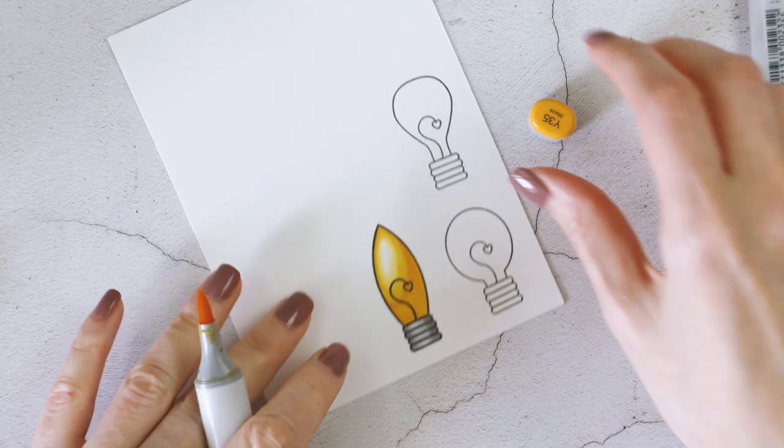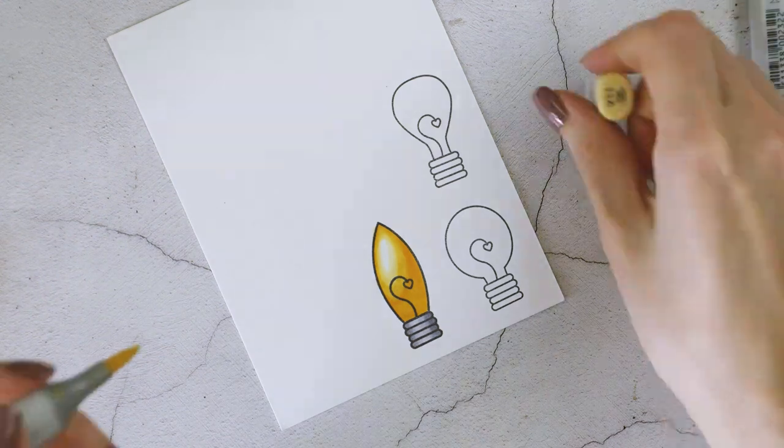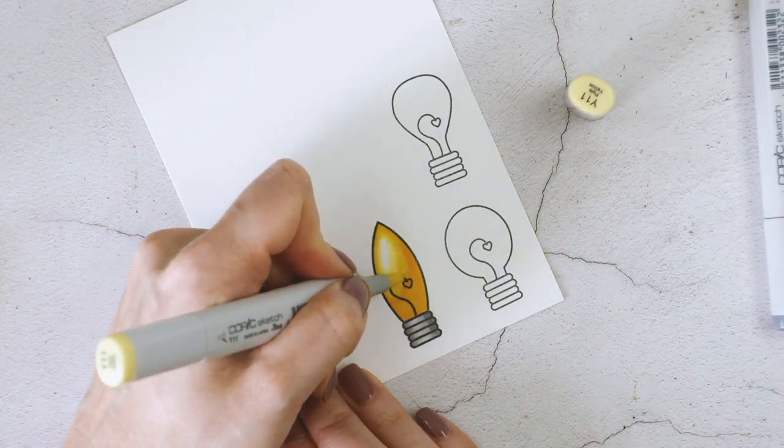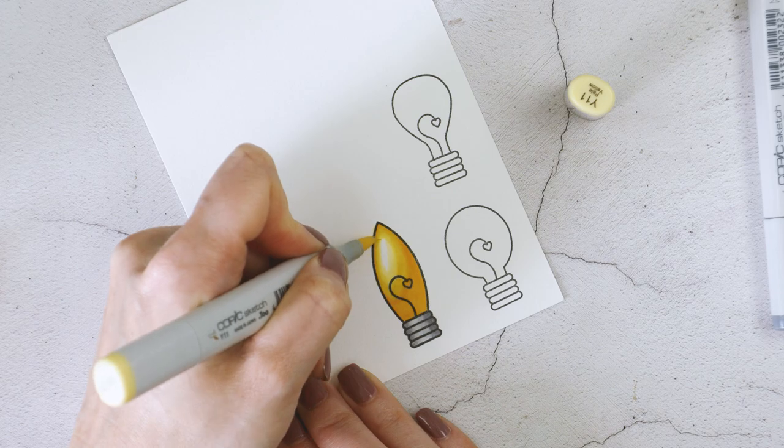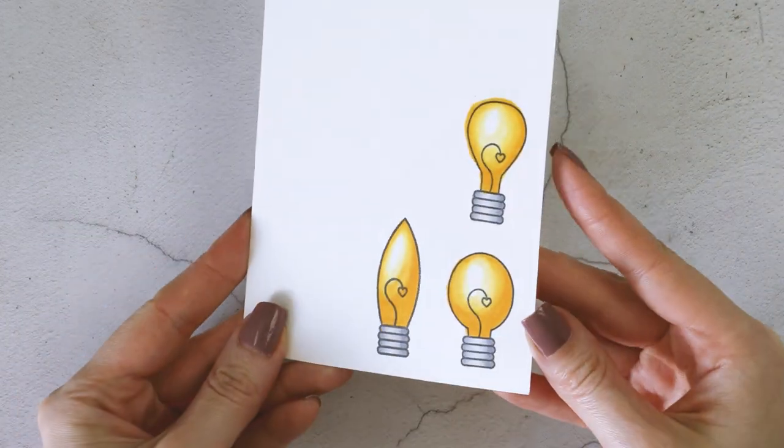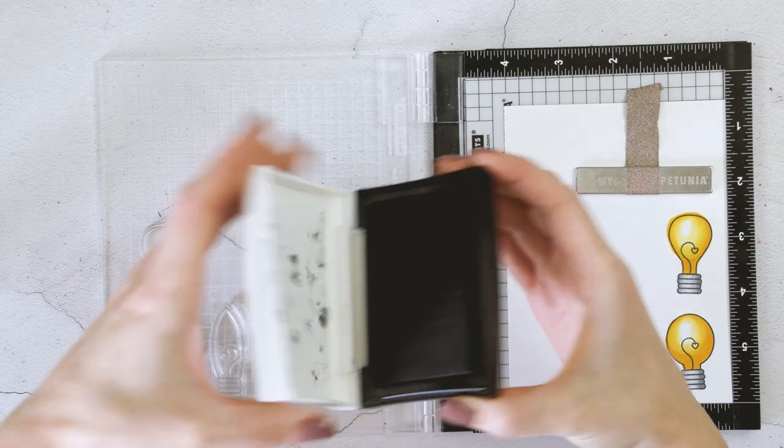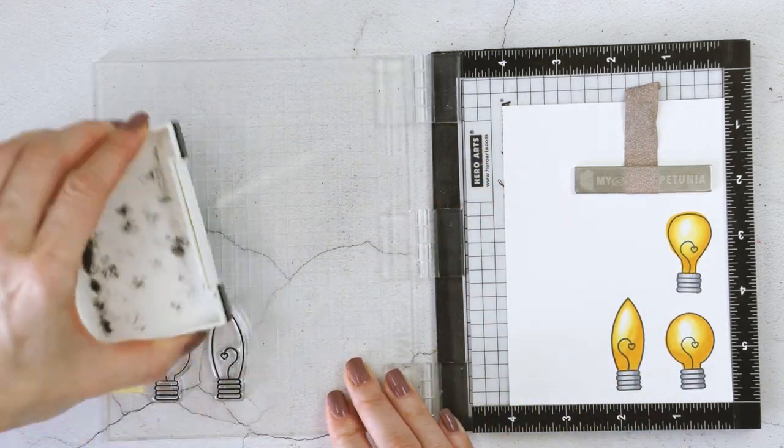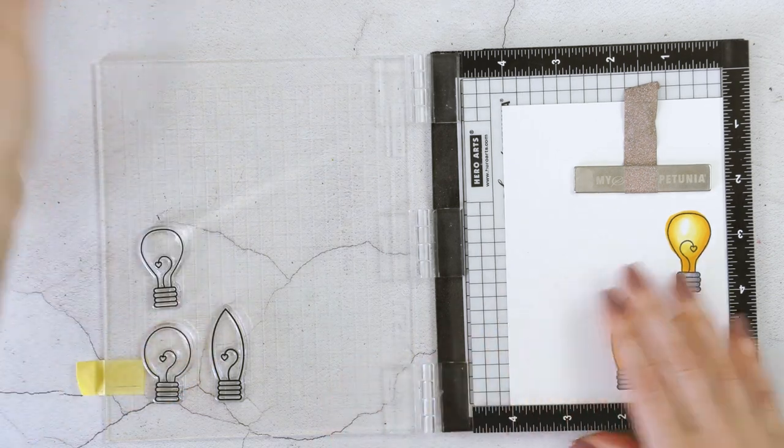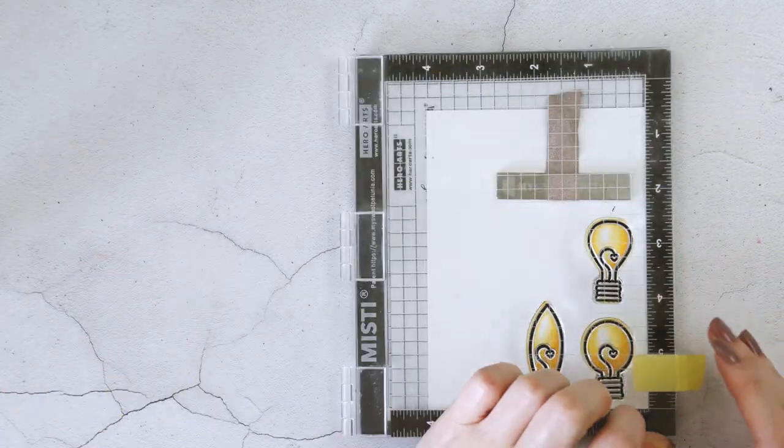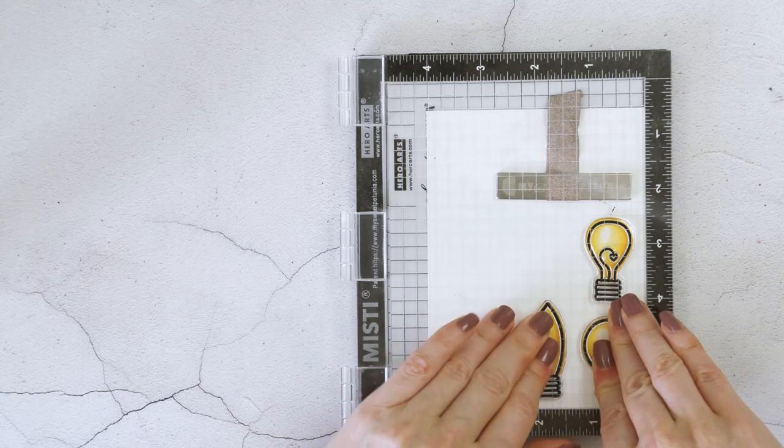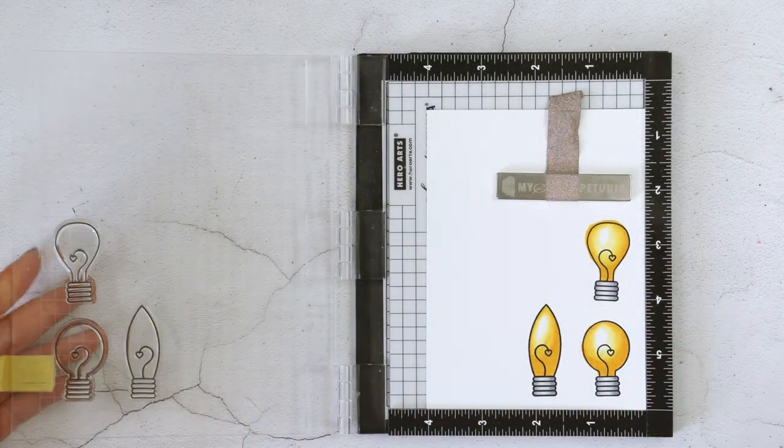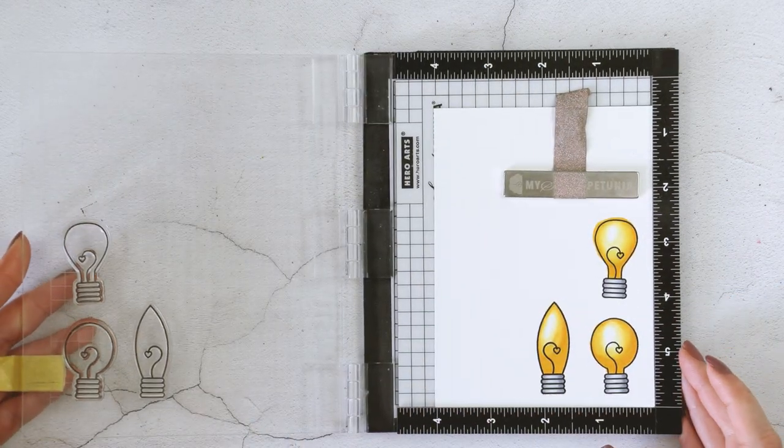Go ahead and color the rest of your light bulbs and replace the panel inside the Misti to re-stamp the outlines in VersaFine Onyx Black ink. This is optional, but because these cards are going to have a lot of contrast, I want the outlines to be really crisp black. And I'm able to have that with the VersaFine Onyx Black ink. Use your coordinating dies and cut the light bulbs out.